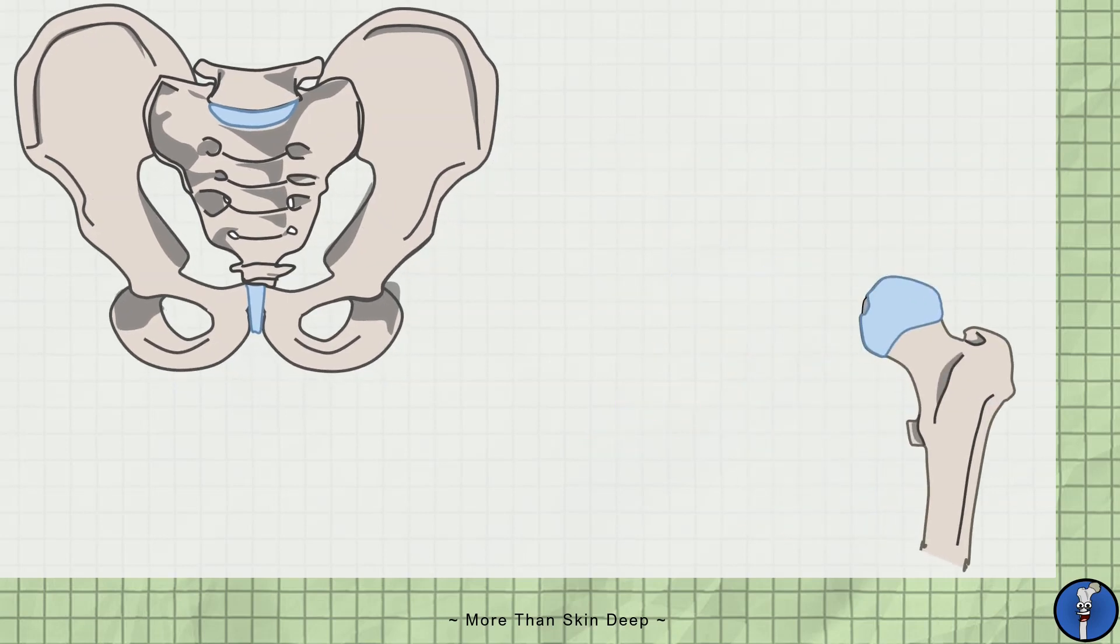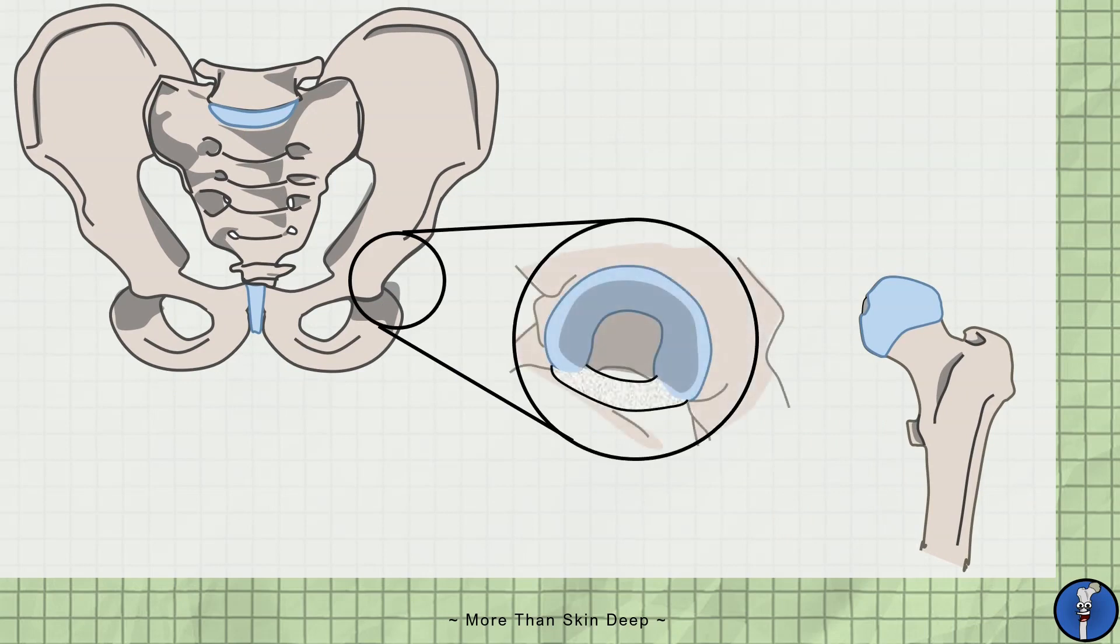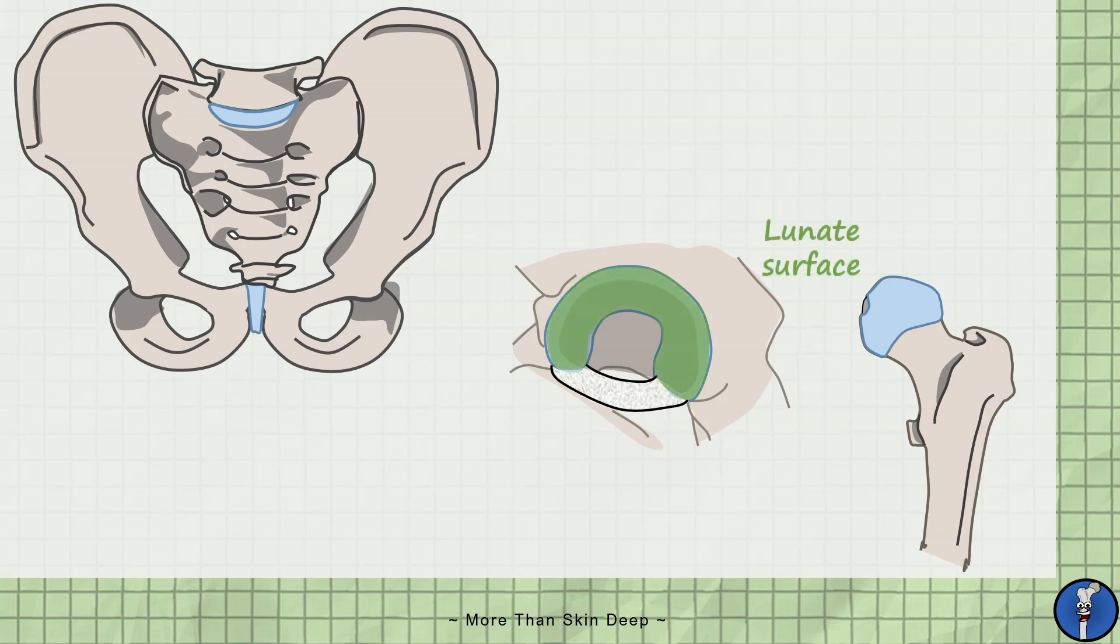Now looking at the pelvic side of the hip joint, we have the acetabulum. This is formed at the convergence of the pubis, ischium and ileum bones that form each hemipelvis. The articular part of the acetabulum is moon-shaped and incomplete, so is known as the lunate surface.